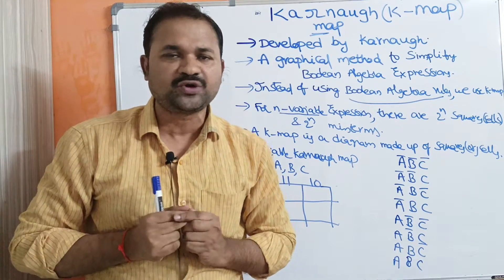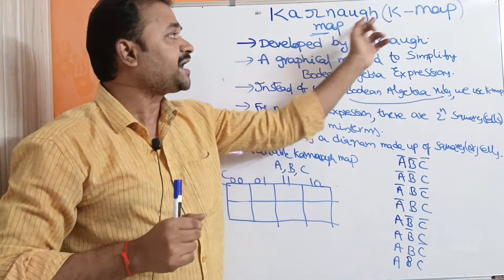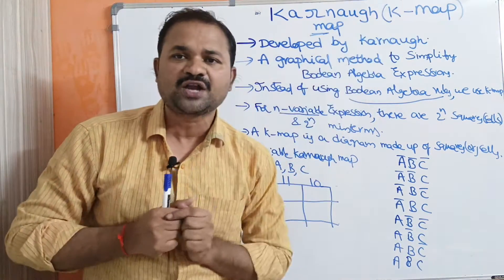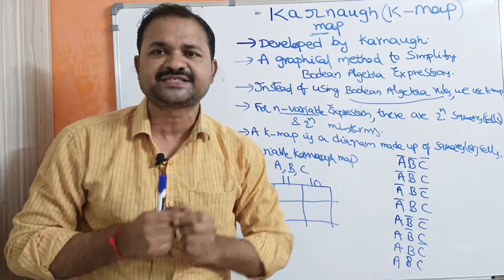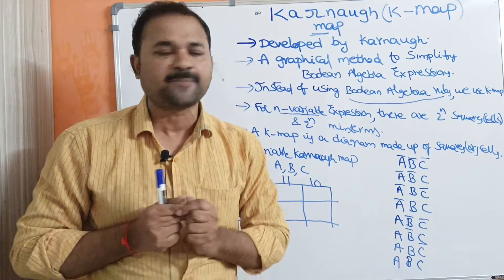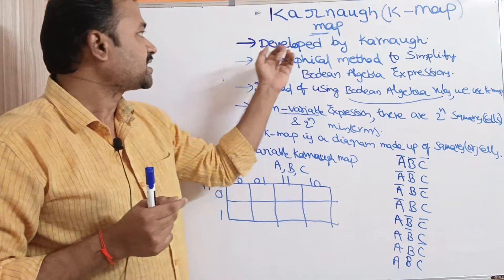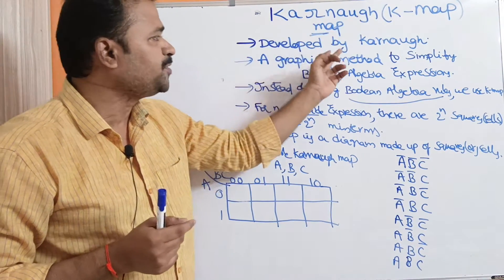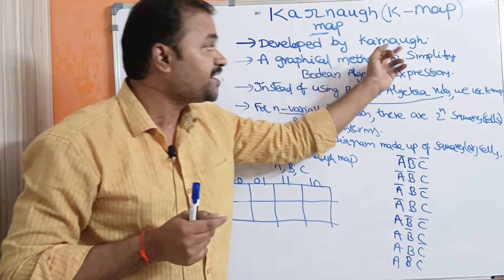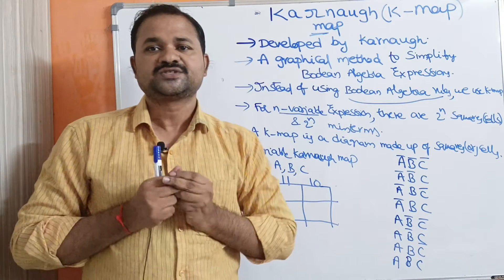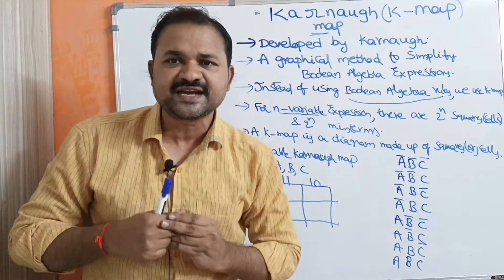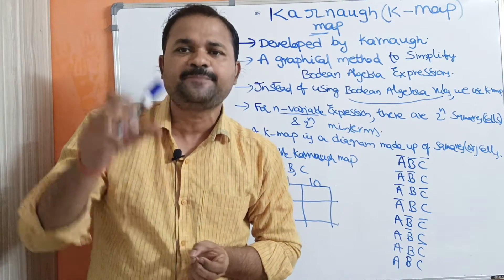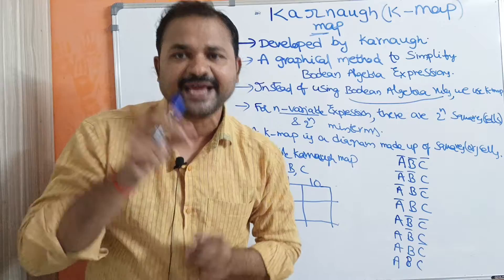Let us discuss about the Karnaugh map. In short, we can call it as K-map. The Karnaugh map was developed by Karnaugh, so Karnaugh is simply the name of the person who invented it.